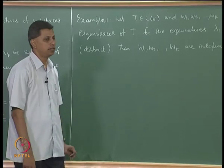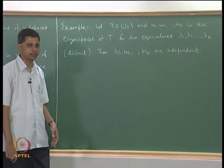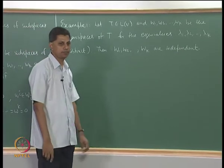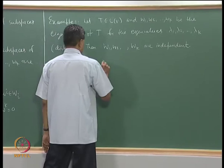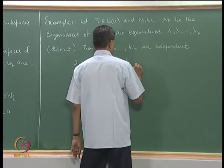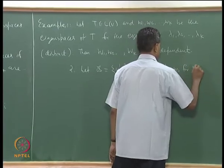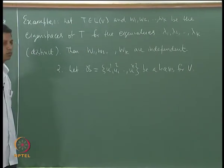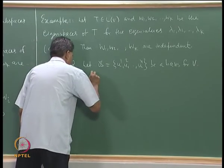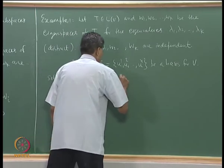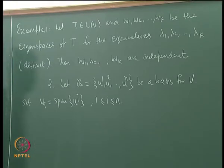In fact we have seen something more: if B1 is a basis for W1, B2 a basis for W2, ..., Bk a basis for Wk, then B1 ∪ B2 ∪ ... ∪ Bk is a basis for the sum W. Another example: take U1, U2, ..., Un as a basis for V; the one-dimensional subspaces spanned by each of these vectors form an obvious set of independent subspaces.